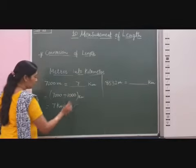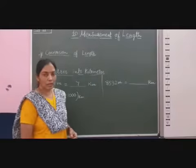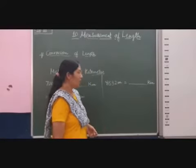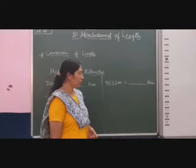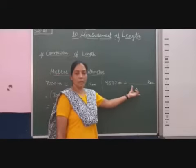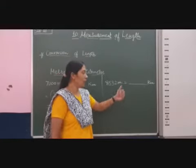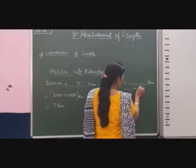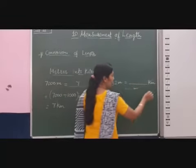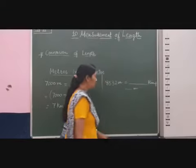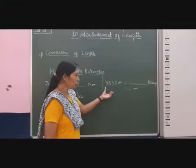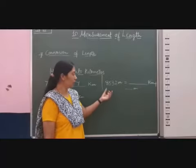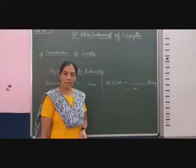So the answer is 7 kilometers. Now the next question is given: 8532 meters is equal to how many kilometers? Here only meters are given, but it comes out in kilometers and meters. For that, we will separate the thousands, hundreds, tens, and ones.